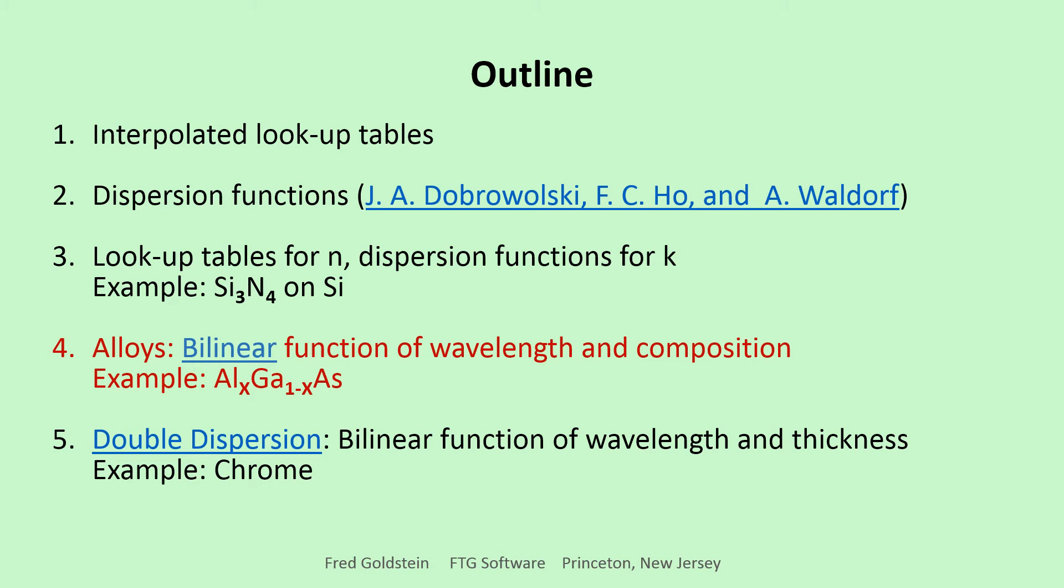We next consider the alloy aluminum gallium arsenide, where N and K are functions of aluminum fraction X. N and K is then a function of fraction X and wavelength.